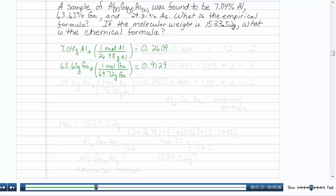And finally, we're going to go with 29.31 grams of arsenic. And we will divide by the molar mass of arsenic from the periodic table, which turns out to be 74.92 grams of arsenic. And that amount comes out to be 0.3921.